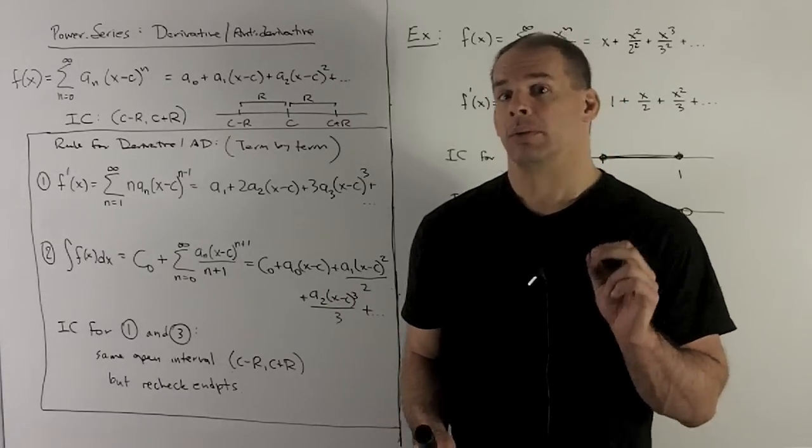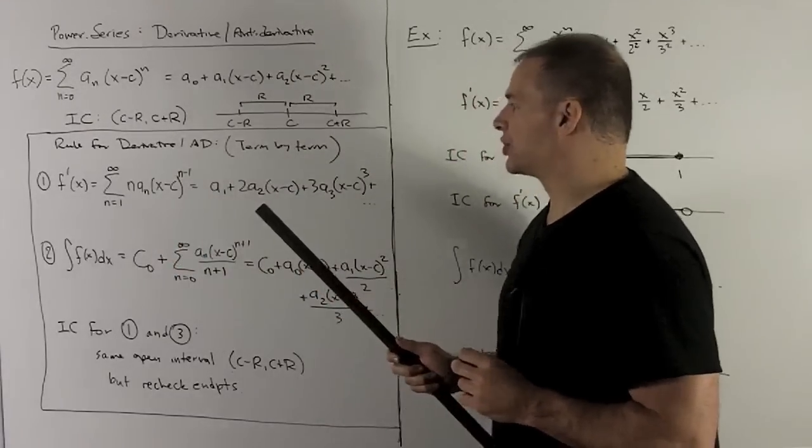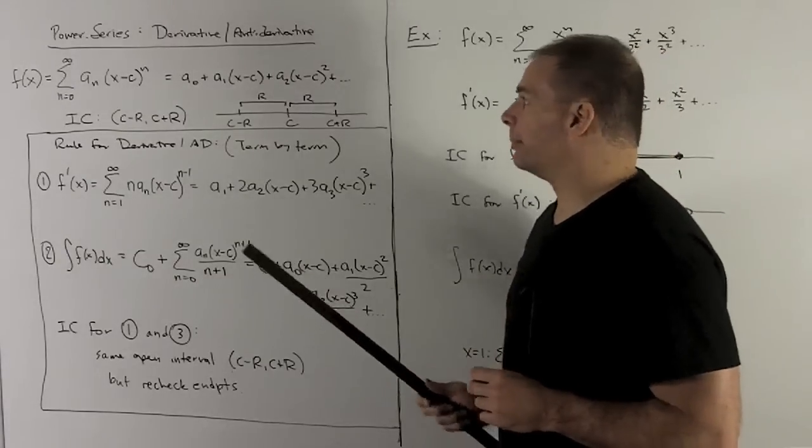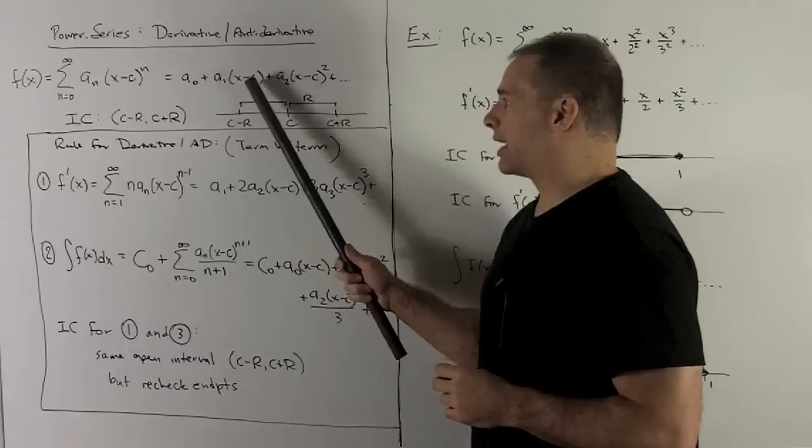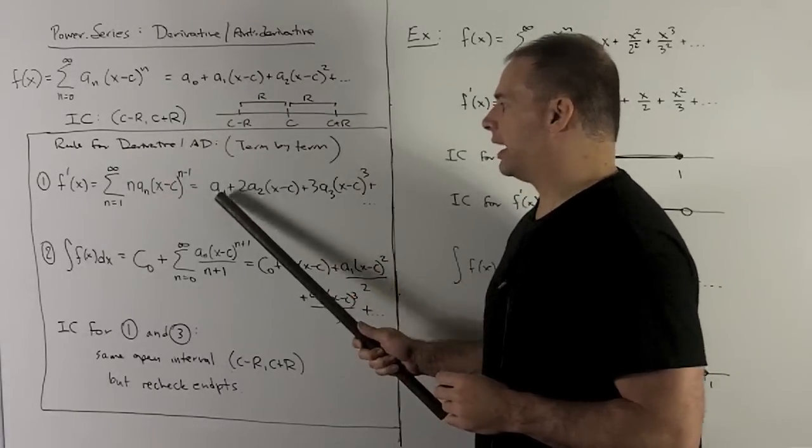So what's the rule going to be? If I'm going to take the derivative of this thing, then that's just to say, do the derivative of each piece, add it all together when you're done. So a zero goes to zero, a one x minus c, x minus c is going to go to one. So I'm just going to get an a one.